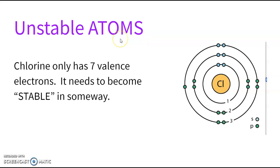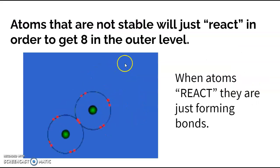Unstable atoms have less than eight, so they have seven or two, but they do not have eight. If you don't have eight, you need to do something to get to eight so that you can be stable, and so what they do is they react.